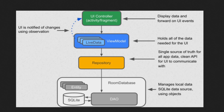Hey guys, welcome back to my channel. Today in this episode we'll visualize how data flows through an Android app. This image shows data flowing through an app — you may recognize it from Google's Android courses. When I first learned Android architecture components, I found it very hard to visualize how it works. So I decided to create an animation to help viewers easily understand how data flows through an Android app.